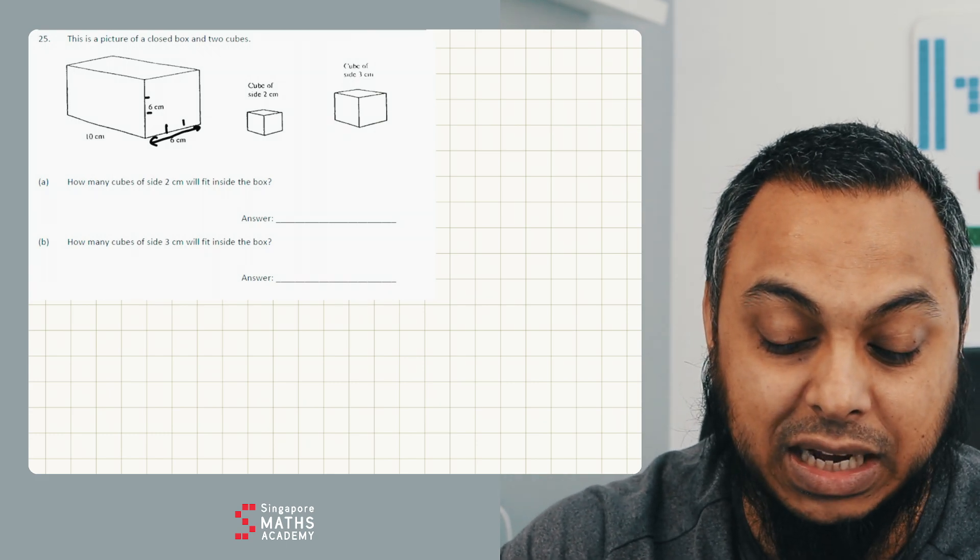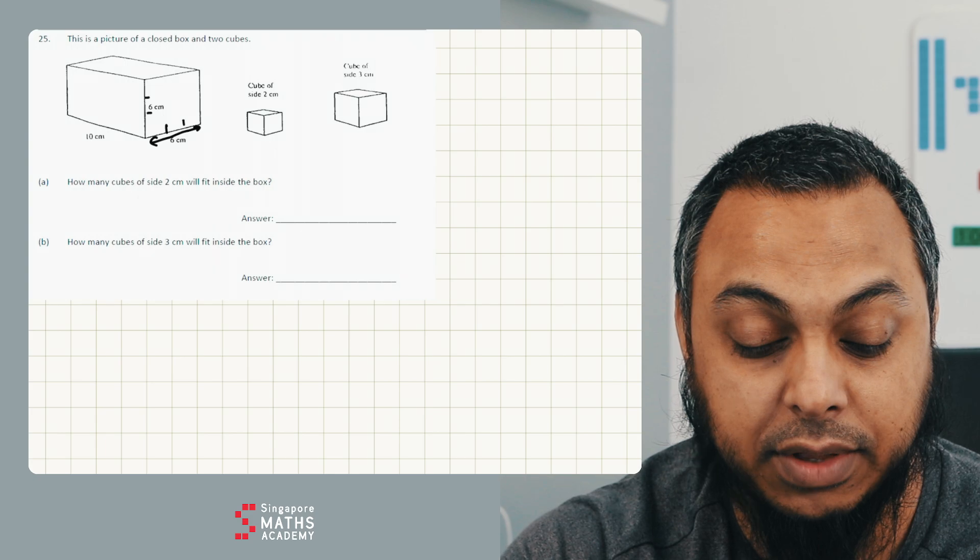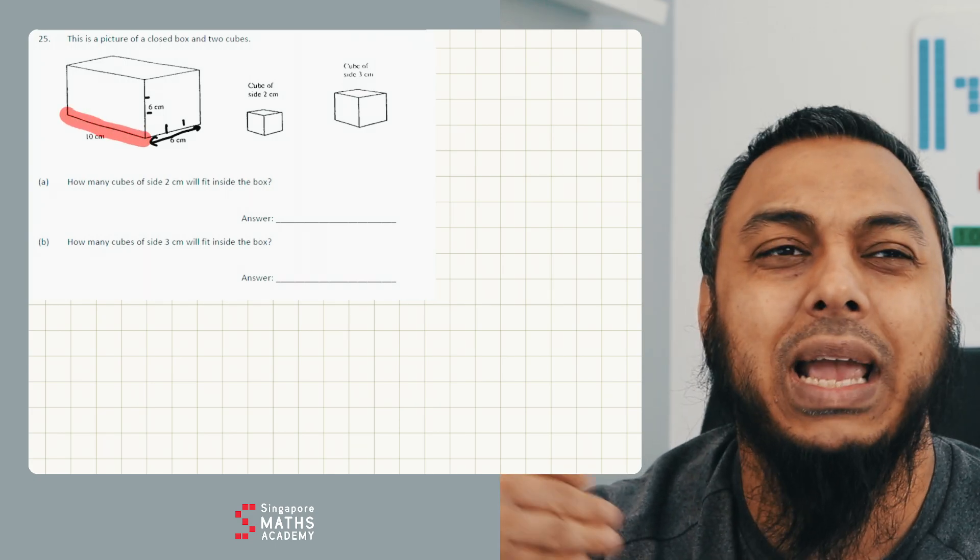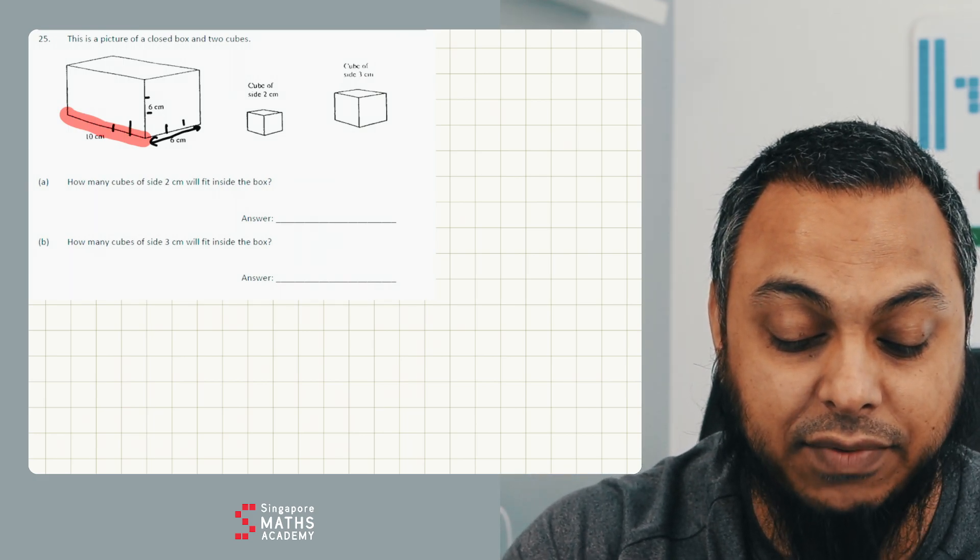Now, how many times can I have those 9 cubes going all the way down in terms of its depth for this question? Depth is 10 centimetres. And so I can have 10 divided by 2. I can have five layers there. I can have five layers.